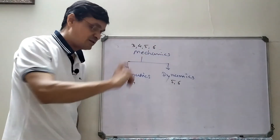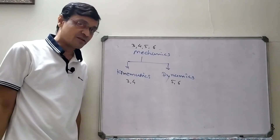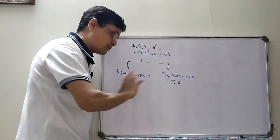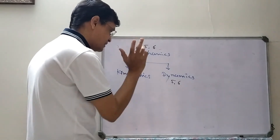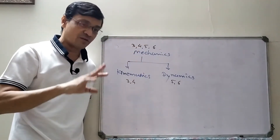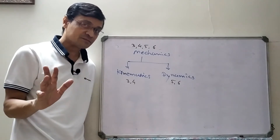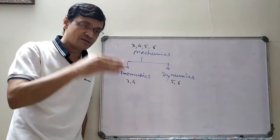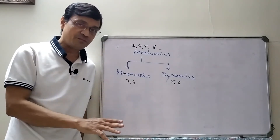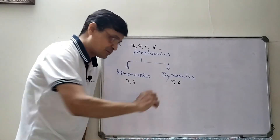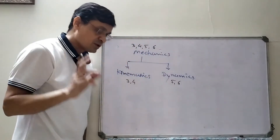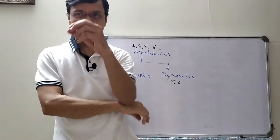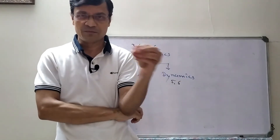To summarize: the branch of physics dealing with motion is called mechanics. Kinematics studies motion without causes, while dynamics studies motion plus its reasons, properties of objects, and properties of motion. This is the basic bifurcation of mechanics.